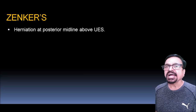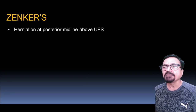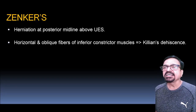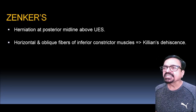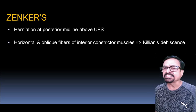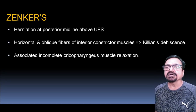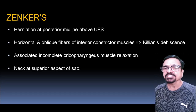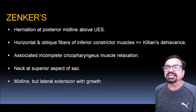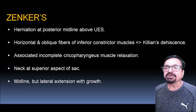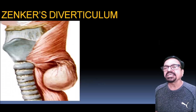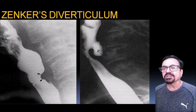Zenker's diverticulum is herniation at the posterior midline above the upper esophageal sphincter, occurring at the dehiscence between horizontal and oblique fibers of the inferior constrictor muscles. It is associated with incomplete cricopharyngeal muscle relaxation. The neck of the diverticulum is at the superior aspect of the sac, with midline position and lateral extension with growth.